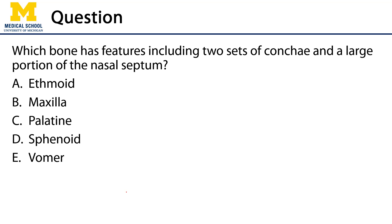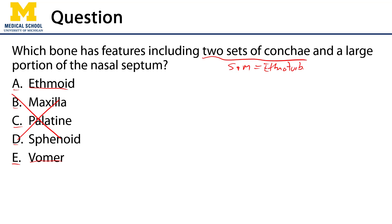The assessment question for this video is: which bone has features including two sets of conchae and a large portion of the nasal septum? Is it the ethmoid, maxilla, palatine, sphenoid, or vomer? The three parts of the nasal septum are the septal cartilage, the vomer, and the ethmoid — so we can eliminate the other three. When we think of the two sets of conchae, the superior and middle conchae are known as the ethmoturbinates. So the correct answer is A, ethmoid.